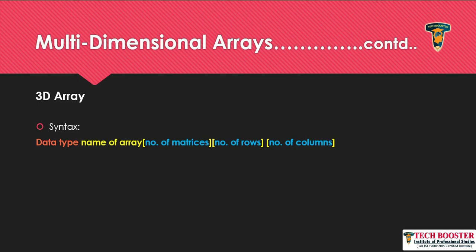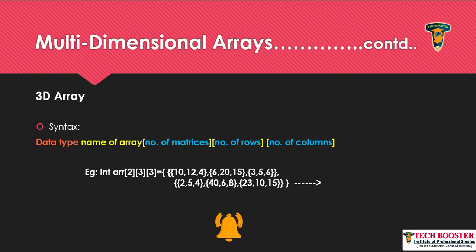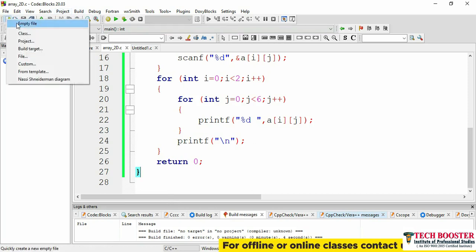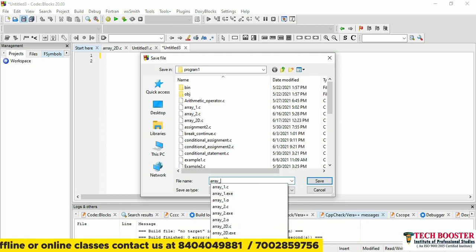The syntax for a 3D array is: data type, array name, then three square brackets. The first parameter defines the number of matrices, the second defines the number of rows, and the third defines the number of columns. In this example, I am creating 2 matrices, each with 3 rows and 3 columns. Let me open code block and create a new file named array_3d.